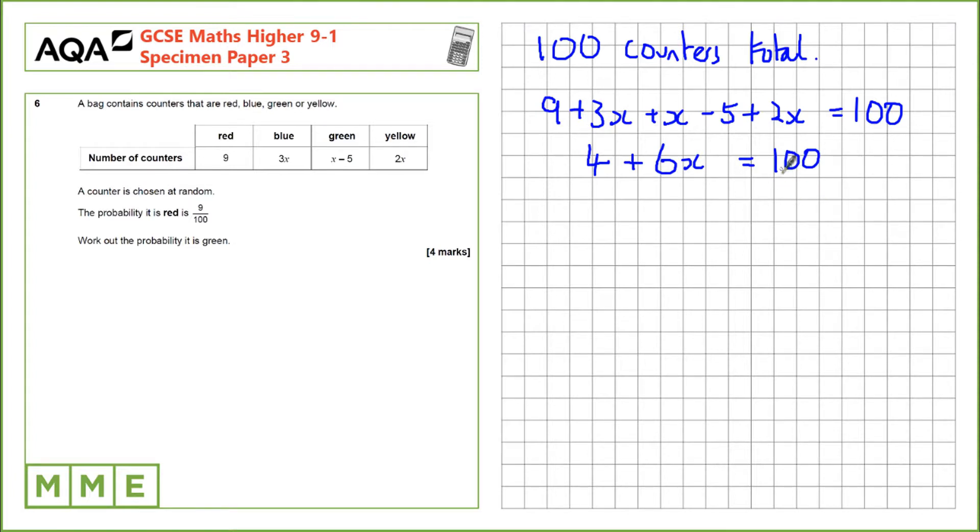Now if we want to find the value of x we can just rearrange. So let's take away 4 from both sides. So we have 6x on the left hand side and 96 on the right hand side. Then we divide by 6 to find x. 96 divided by 6 is 16.